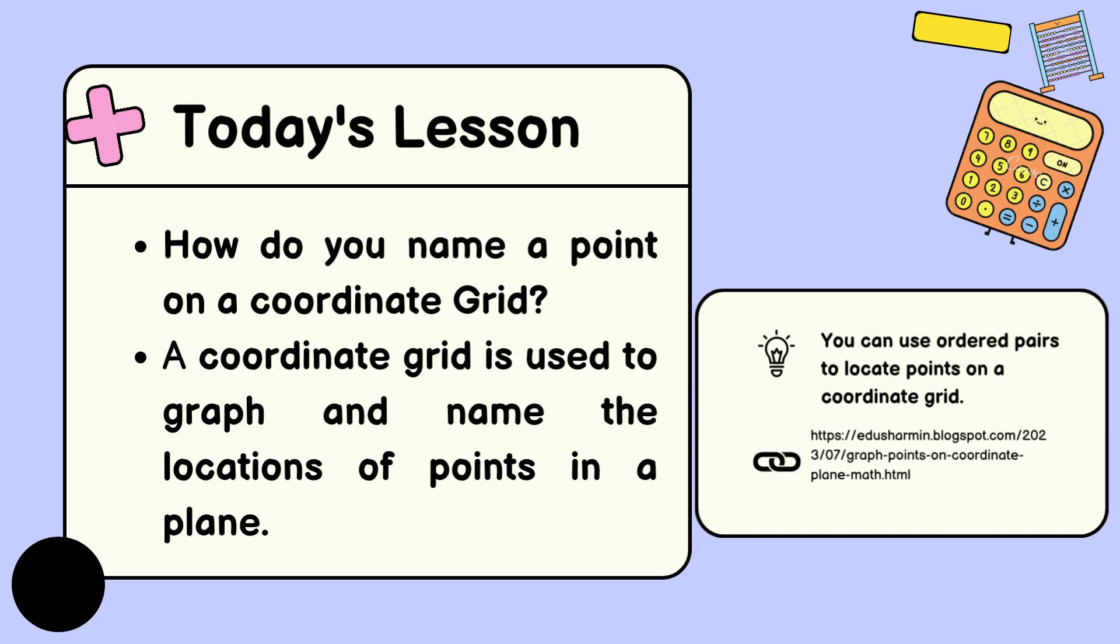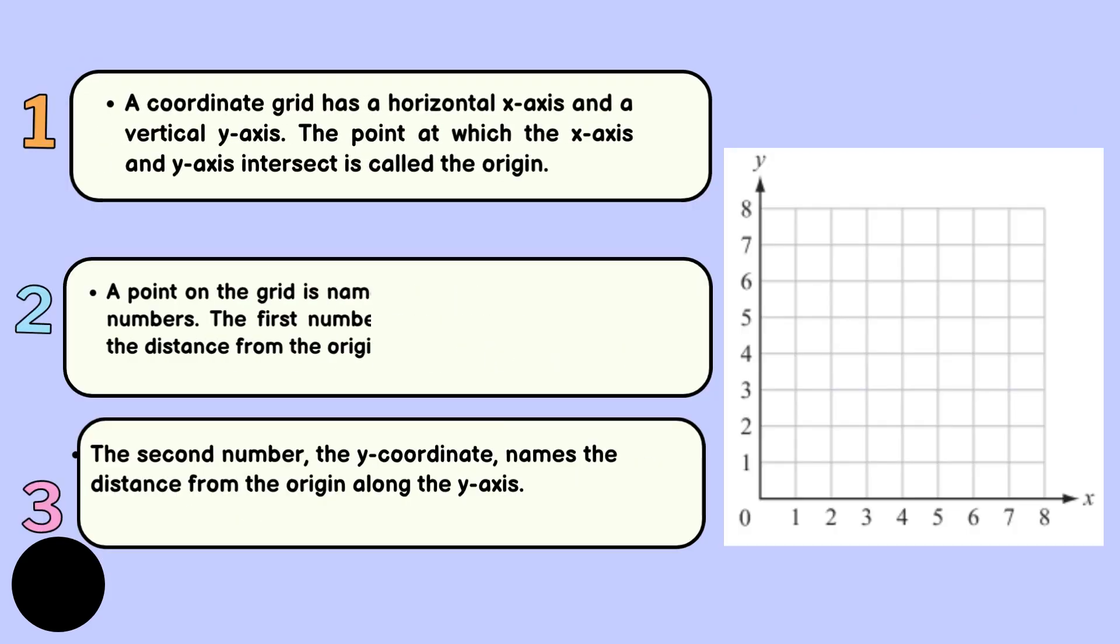Today's lesson: how do you name a point on a coordinate grid? A coordinate grid is used to graph and name the locations of points in a plane. You can use ordered pairs to locate points on a coordinate grid.